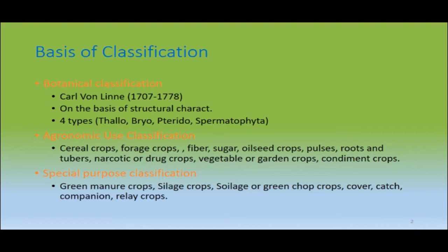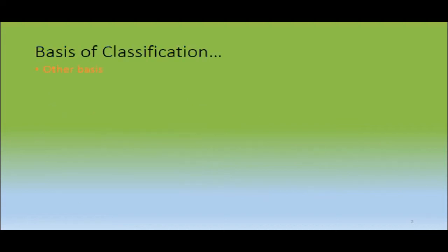Under agronomic use classification, feedstuffs are classified as cereal crops, forage crops, fiber, sugar, oil, and seed crops. Then there is special purpose classification — for example, if we use some crops for the production of silage they are known as silage crops, or manure crops. There are also other bases of classification, such as on the basis of life cycle of the plant: annual, bi-annual, and perennial plants.